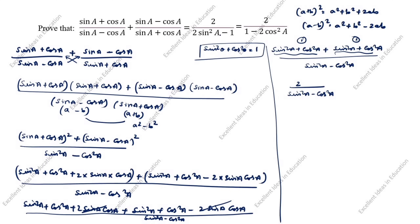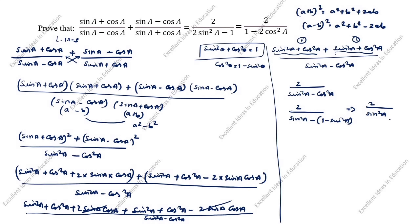But we need to prove 2 divided by 2 sin square a minus 1. This is the LHS; we need to prove the RHS. This cos square a — how will we change it? We will use cos square a equals 1 minus sin square a. So: 2 divided by sin square a minus of 1 minus sin square a. This gives 2 divided by sin square a minus 1 plus sin square a. Here is 1 sin square a and here is also 1 sin square a, giving 2 divided by 2 sin square a minus 1. You see, this one is proved.